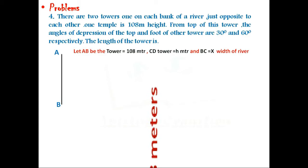BC is the distance between the two towers, or the width of the river. In the question, it is stated that the angle of depression is 60 degrees and 30 degrees to the foot and top of the other tower respectively.